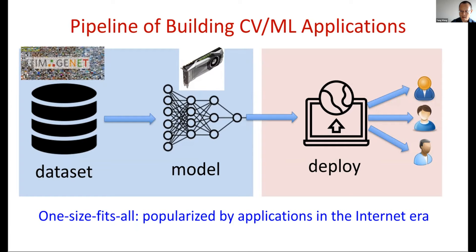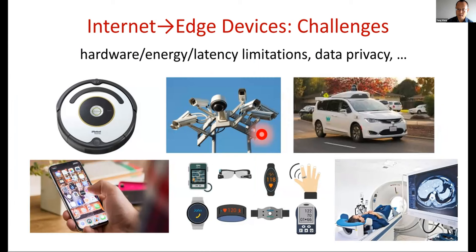This one-size-fits-all pipeline was made popular mainly by large internet companies like Google and Facebook. Web search is one of the early successes of machine learning at massive scale, and for web search this makes sense because the search engine handles queries from all over the world — one single model on the cloud serving all users. These web applications run on the cloud, so you can safely assume enough computing power to run the model, and the deployment environment is relatively simple.